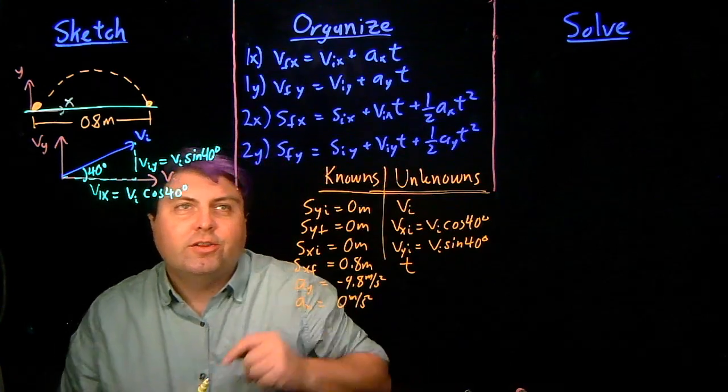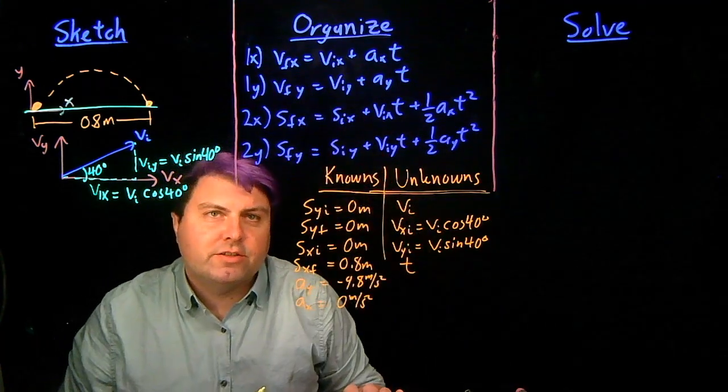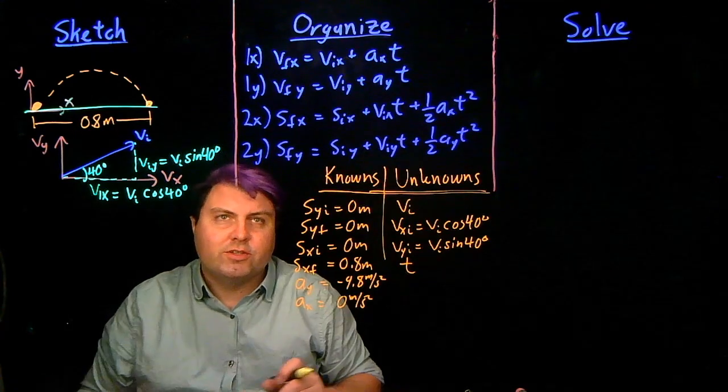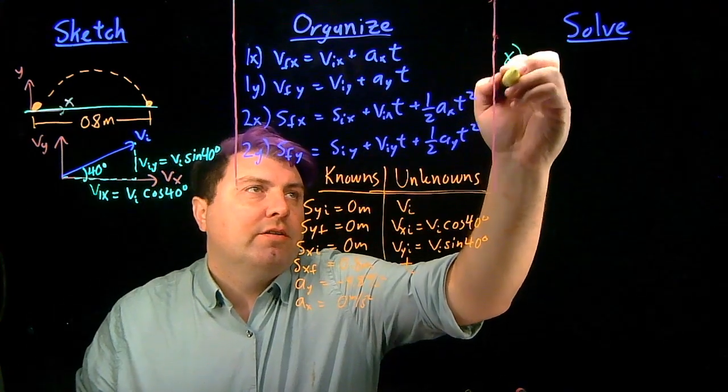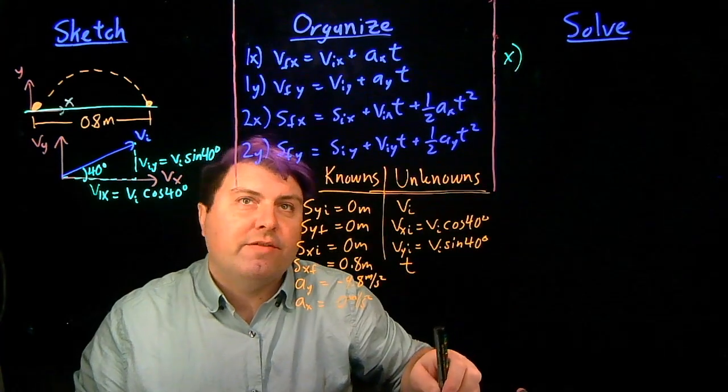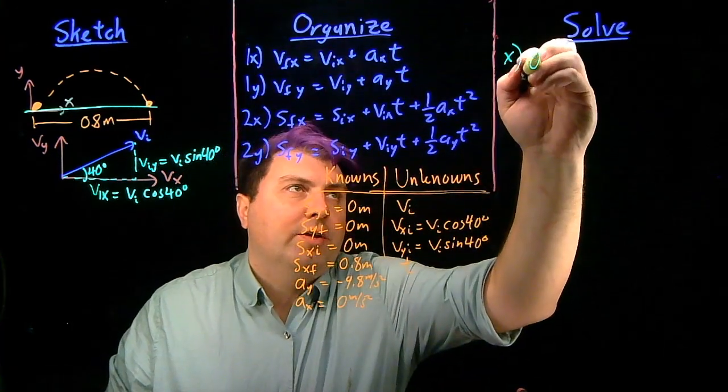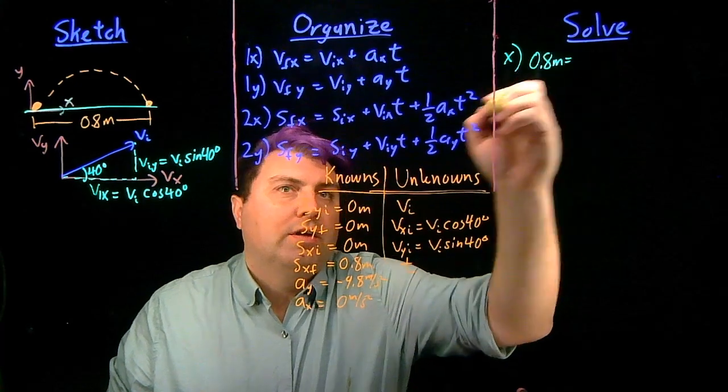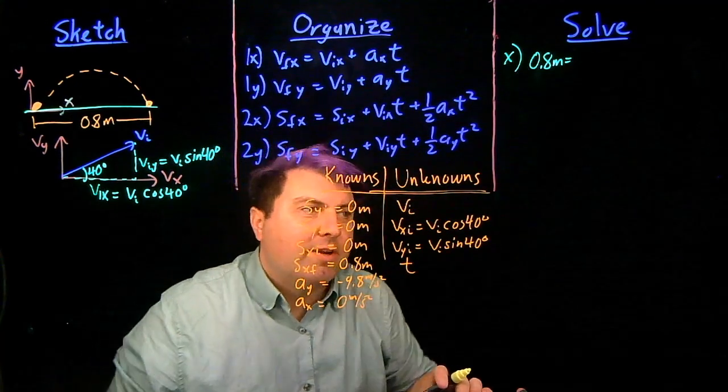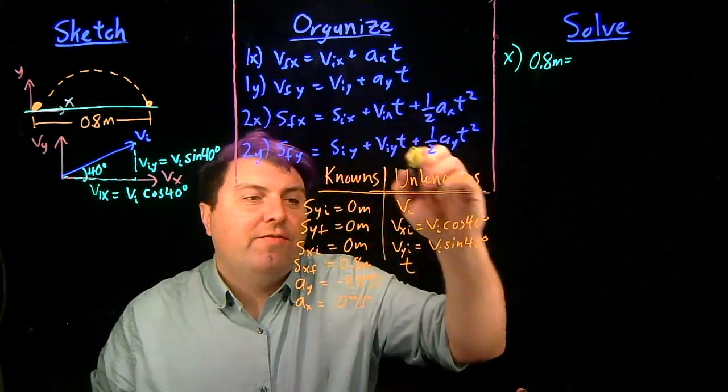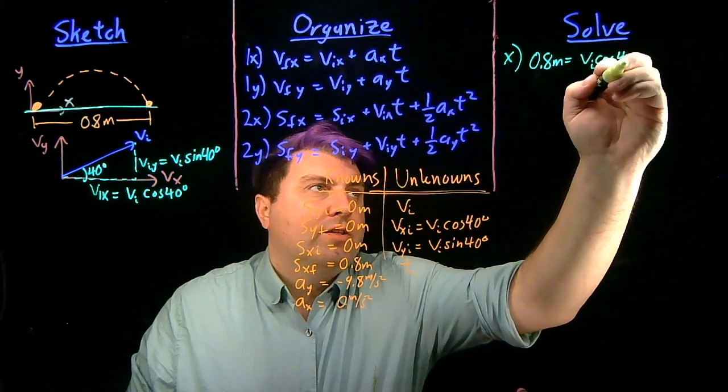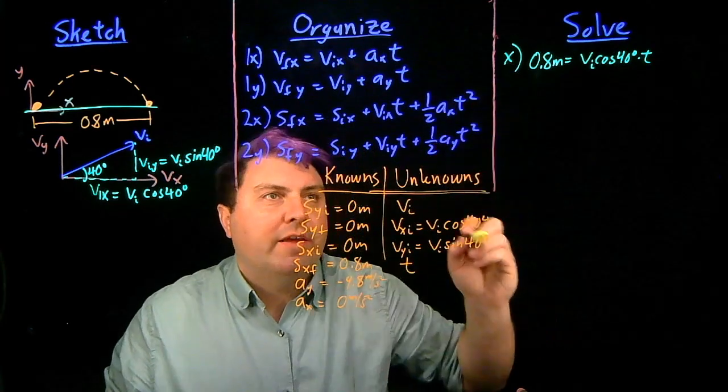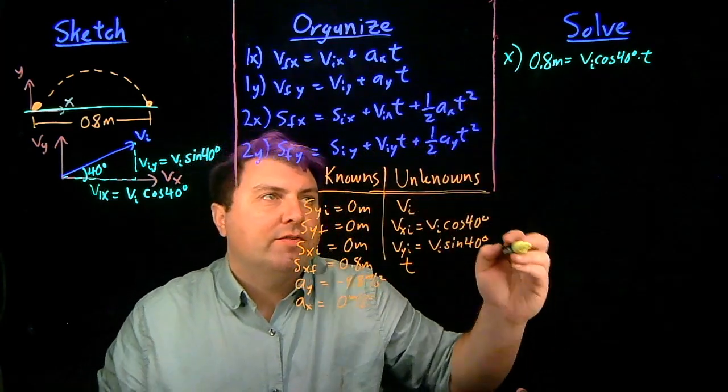So looking at our equations here, equations 2x and 2y are going to have a lot of interesting stuff for us. So looking in the x direction, we have sfx, which we can write as 0.8 meters, equals six. For space, I'm not going to write any zeros. Vix is vi cosine of 40 degrees times time, and then again, 1 half ax t squared is also 0.